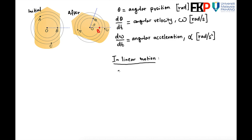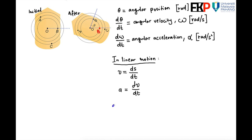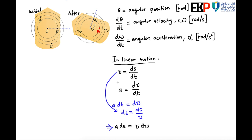This is similar to linear motion, where velocity v equals ds/dt and acceleration a equals dv/dt. We can rewrite this as a·dt = dv, and since dt = ds/v, we obtain a·ds = v·dv. These are the three basic equations in linear motion.